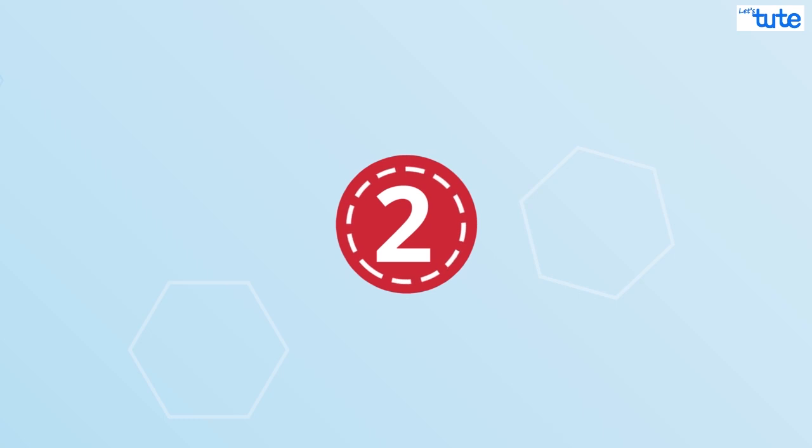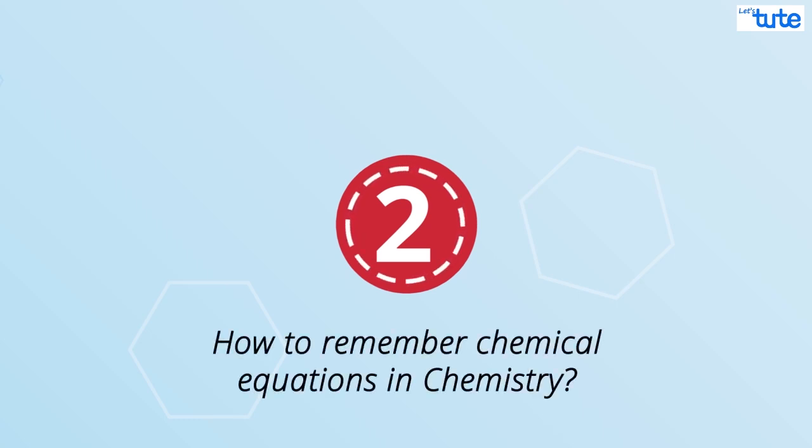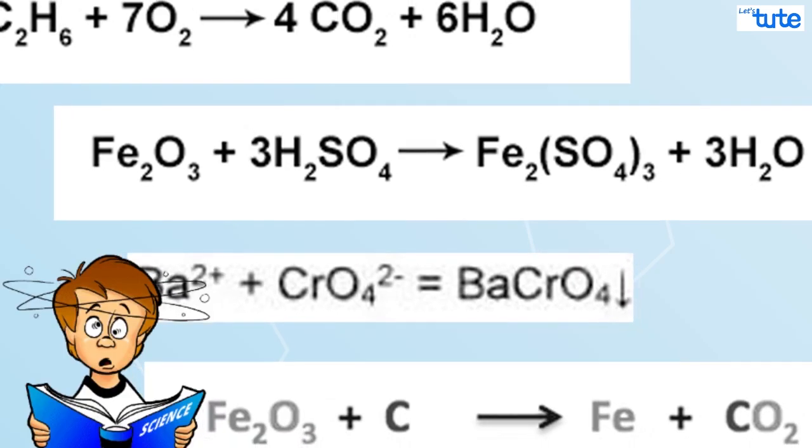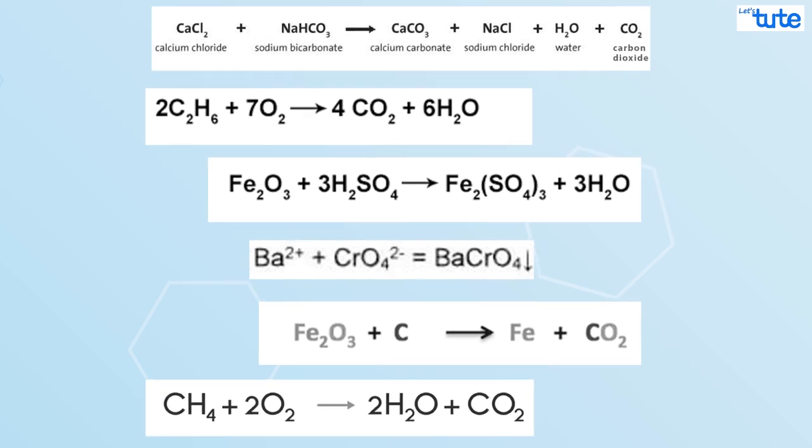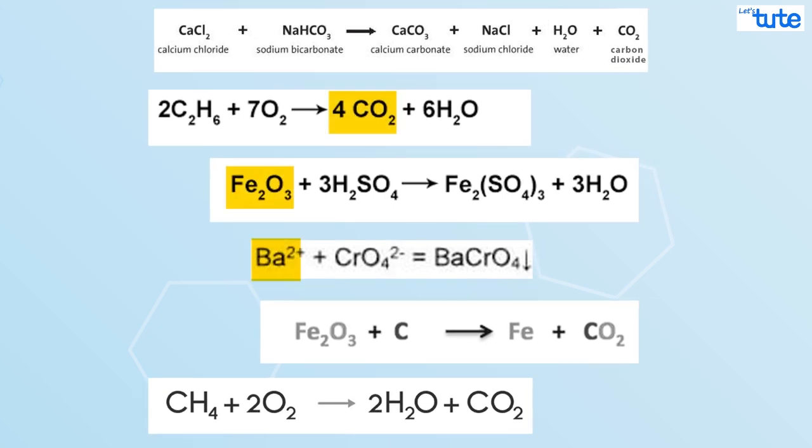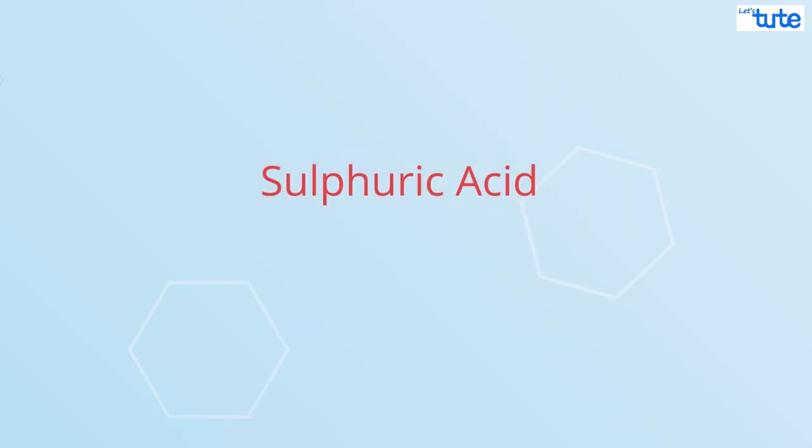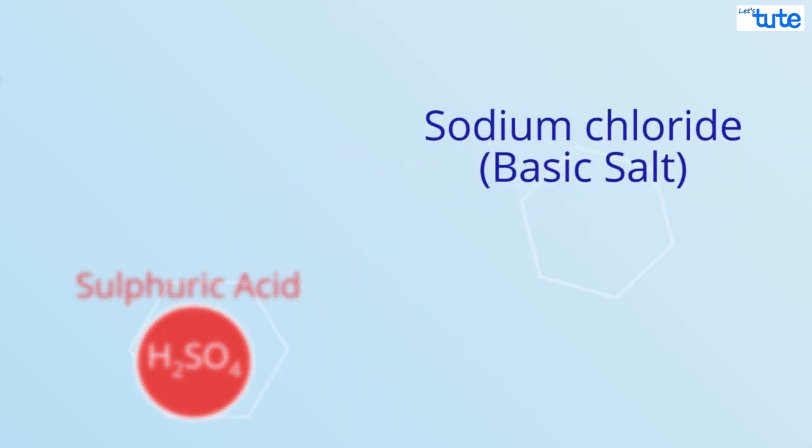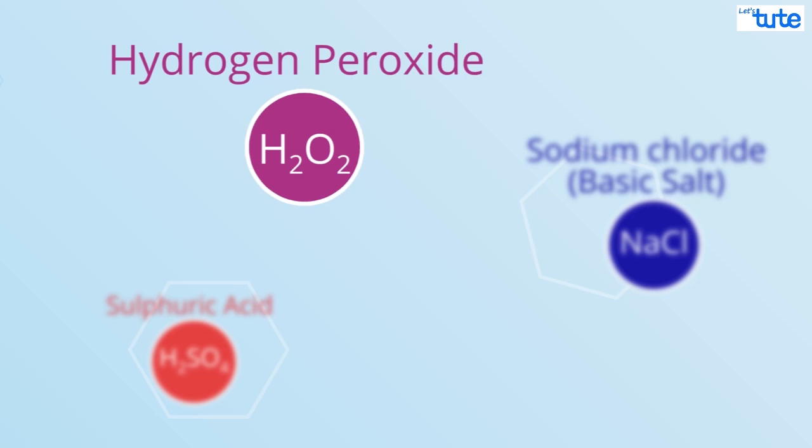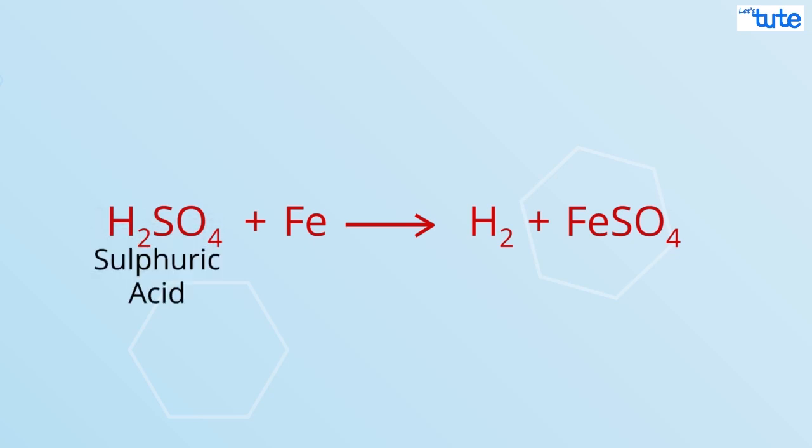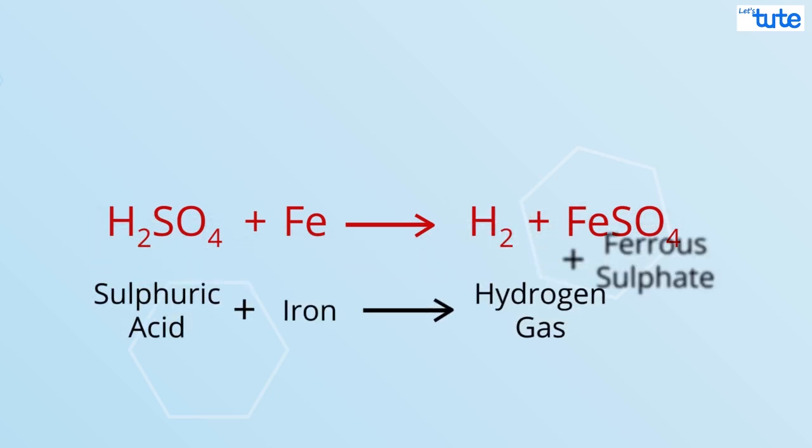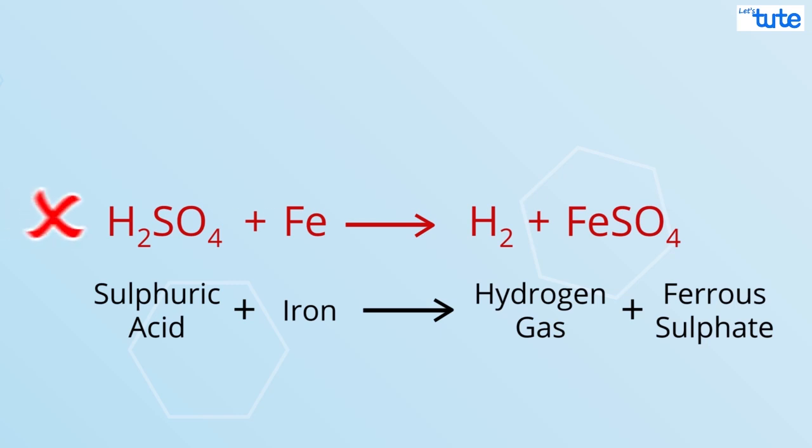The second common question asked to us is how to remember chemical equations in chemistry? We understand that remembering these equations as a whole is very difficult. So what we can do is be thorough with the chemical formula of each compound. Like sulphuric acid is H2SO4, sodium chloride is NaCl, hydrogen peroxide is H2O2 and so on. And now coming to the chemical equation, you just have to learn it as sulphuric acid reacts with iron to give hydrogen gas and ferrous sulphate, and not as H2SO4 plus Fe gives H2 plus FeSO4, understanding the difference?